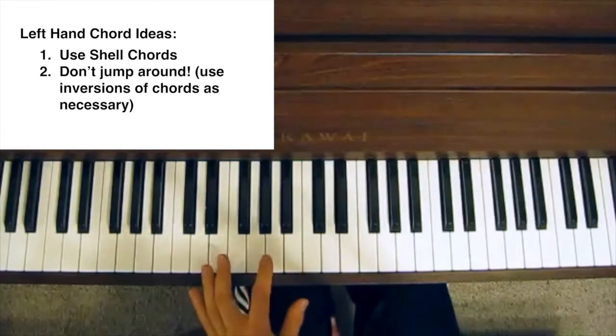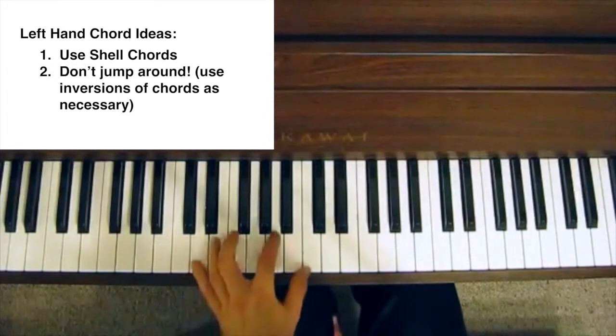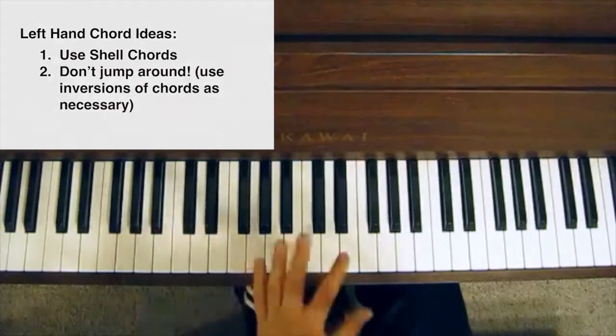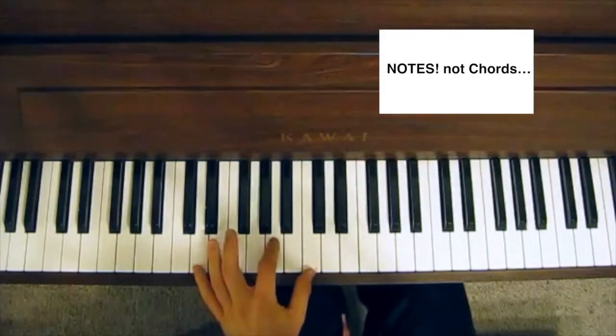For example, if you have a standard 2-5-1 in the key of C major, so Dm7 to G7 to C major 7, you don't have to play all of those chords. You can do something like this instead.